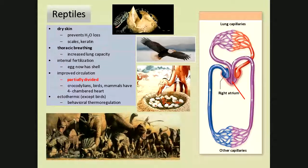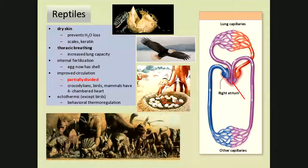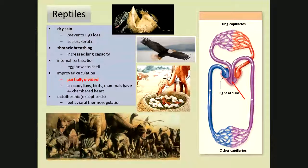The heart is still three chambers in reptiles, so we're still mixing blood, but there is a partially divided heart — minimizing the mixing somewhat and driving up metabolic rate a little. We're still dealing with ectothermic, cold-blooded critters that rely predominantly on behavioral thermoregulation. You see lizards laying on the sidewalk warming up from the concrete — that's behavioral thermoregulation. We do it too: if you're cold, you sit in the sun.